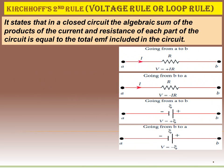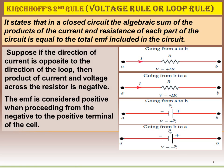Going from A to B, the voltage is equal to plus IR. Going from B to A, the voltage is equal to minus IR. The voltage across the EMF source is plus ε going one way and minus ε the other. If the direction of current is opposite to the direction of the loop, then the product of current and resistance across the resistor is negative. The EMF is considered positive when proceeding from the negative to the positive terminal.